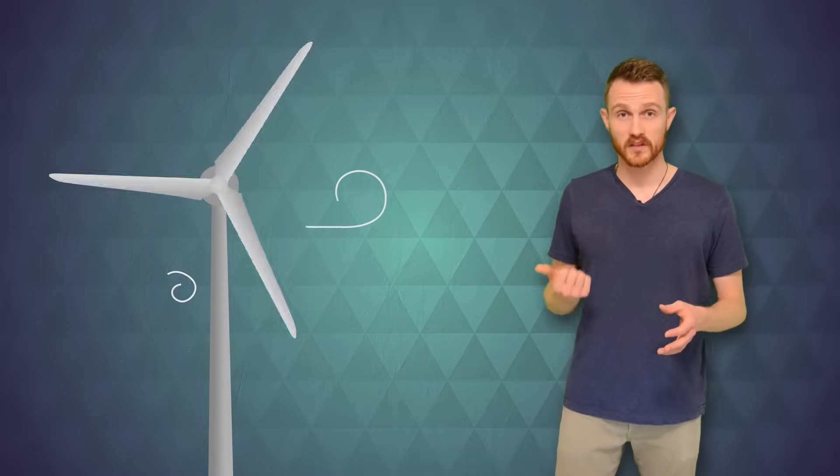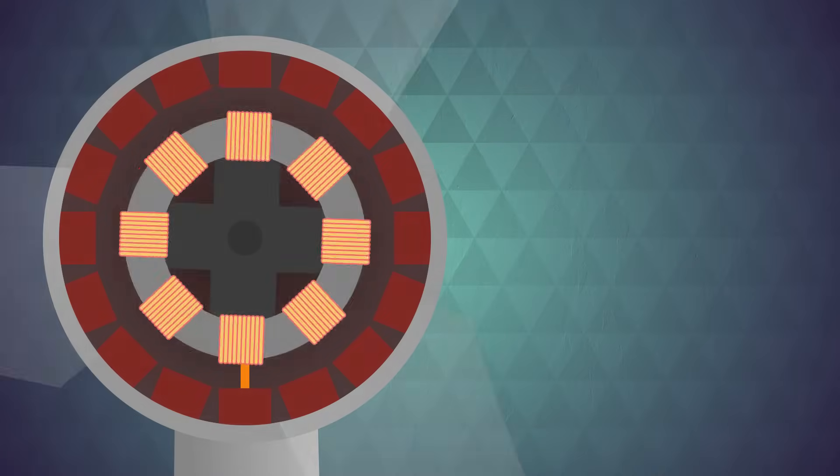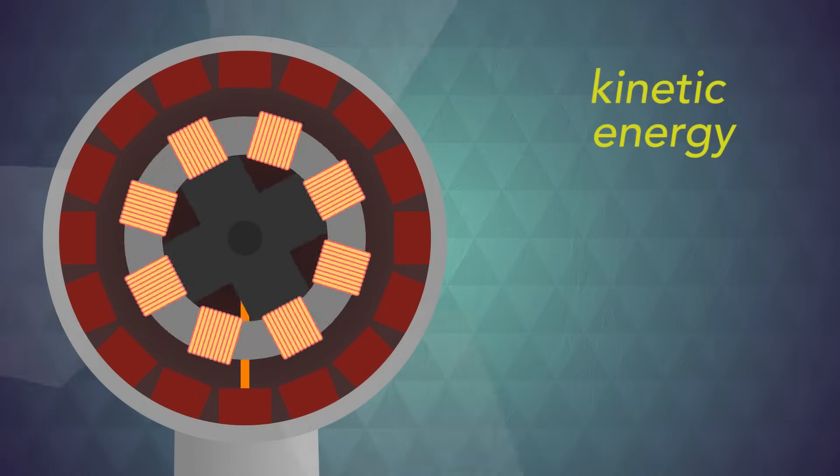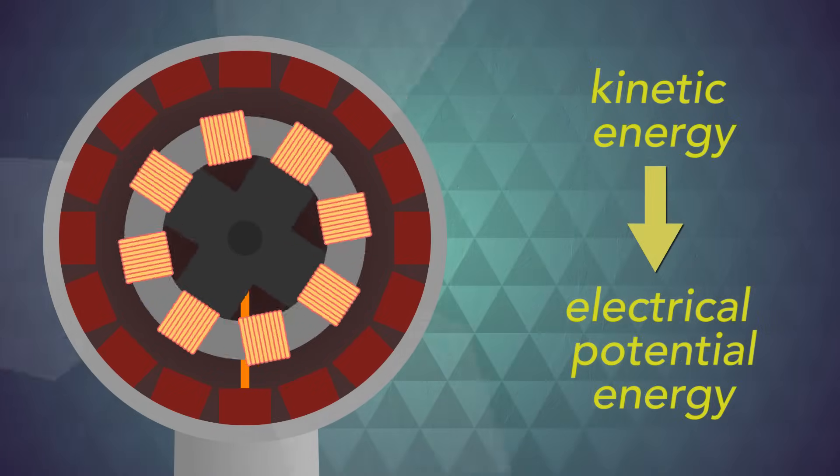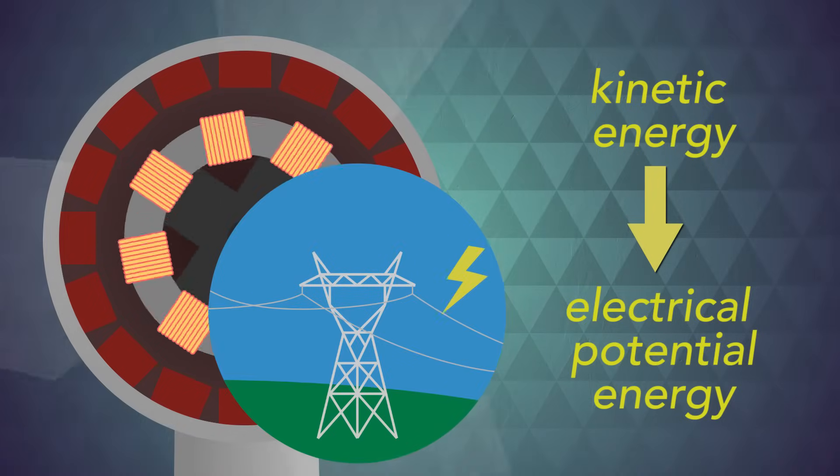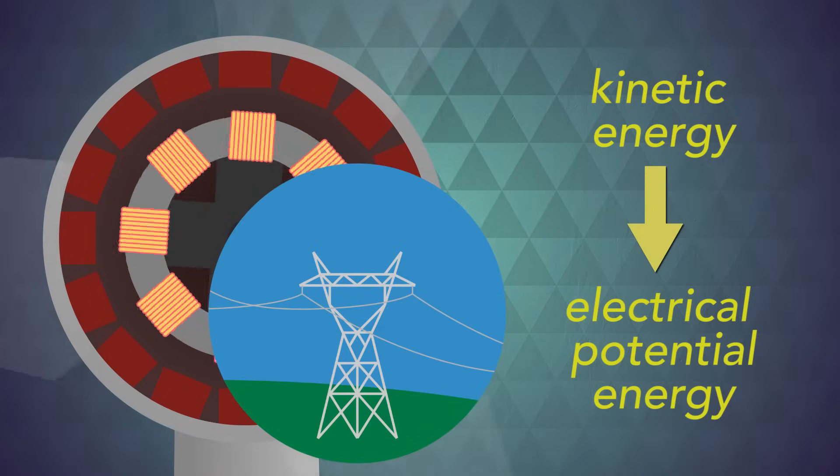It's by changing one form of energy into another like this that we can make useful things happen. Let's go back to the examples from the start. We power our homes with electricity. And let's say that it comes from the wind. When the wind spins a turbine like this one, it has kinetic energy. A generator inside the turbine changes that kinetic energy into electrical potential energy, and that is transferred down power lines to our homes.